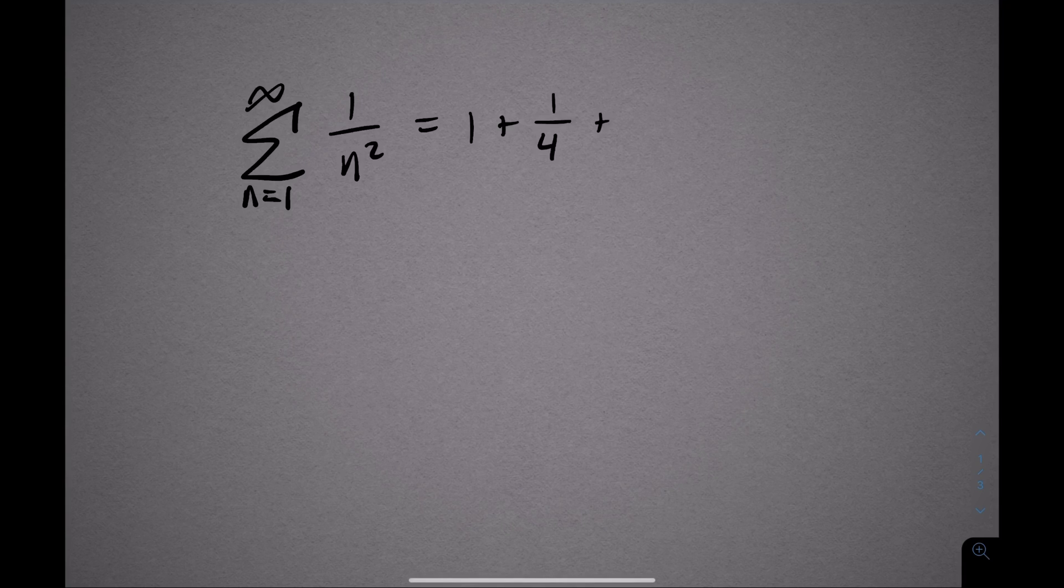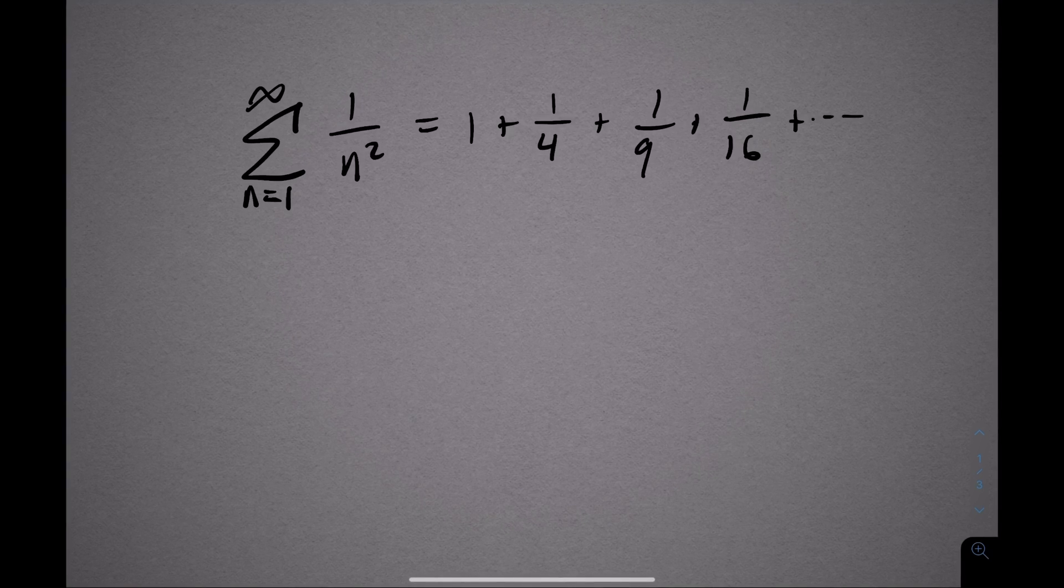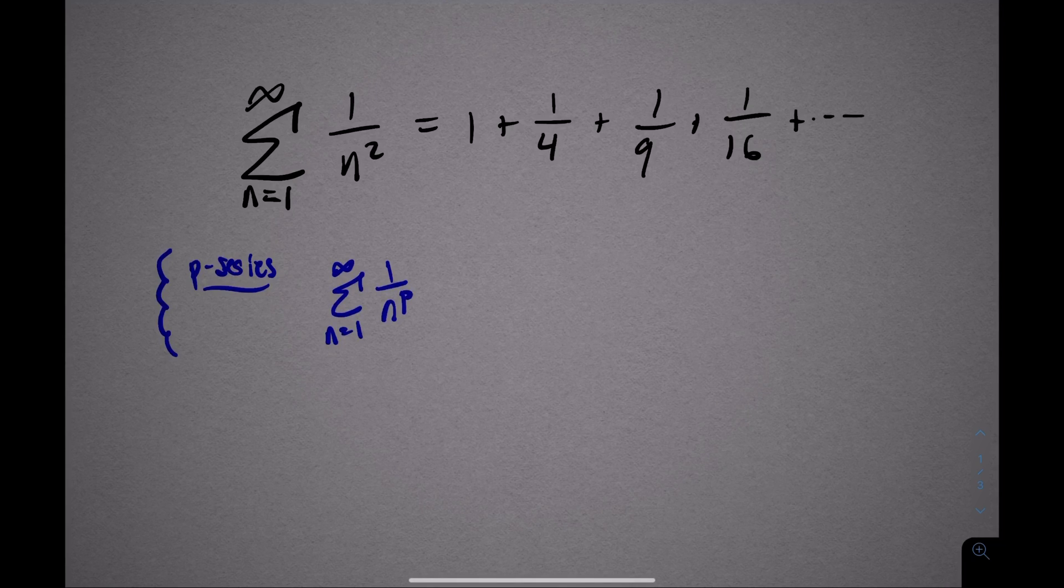One of the first things you learn in a calculus class covering infinite series is that the sum from 1 to infinity of 1 over n squared converges. It's the prime example of a p-series, which we know converge when p is bigger than 1.